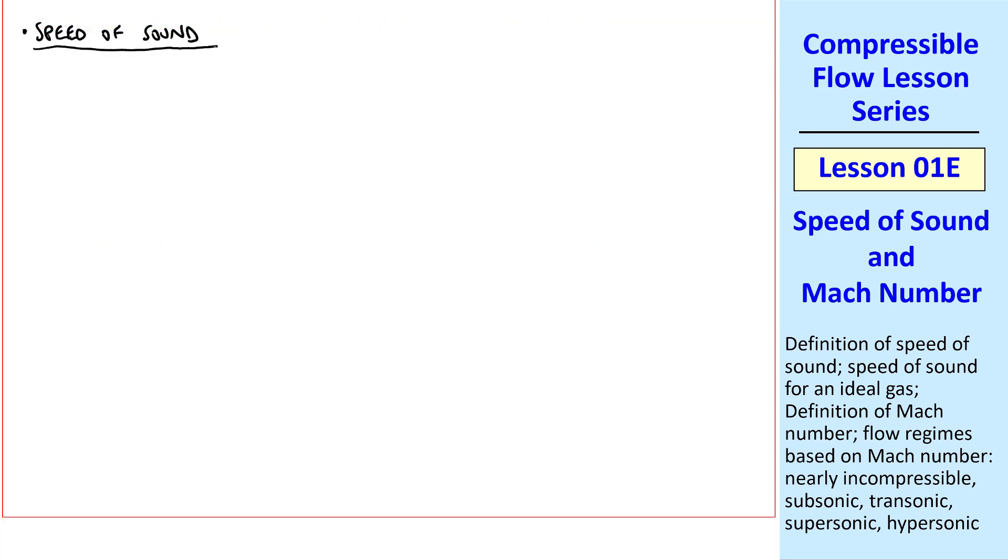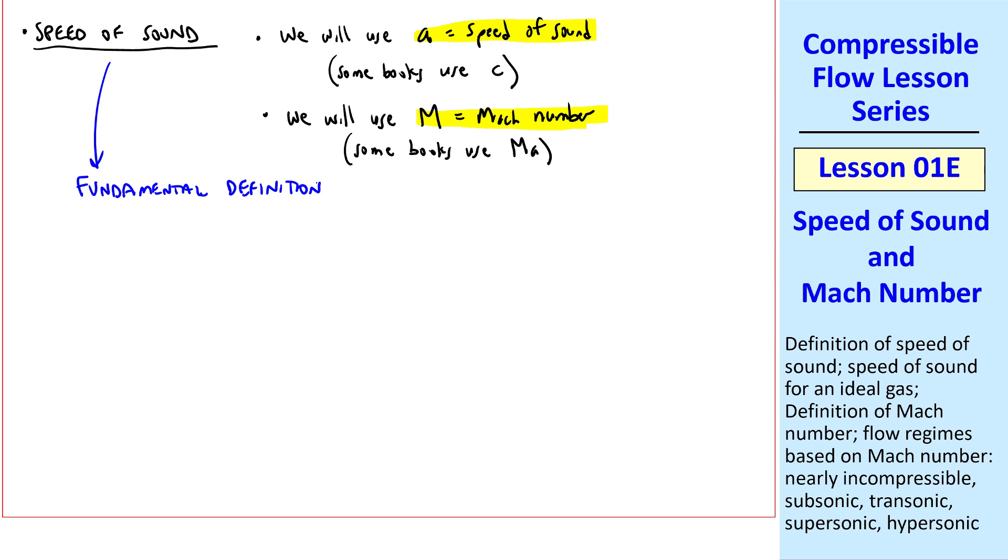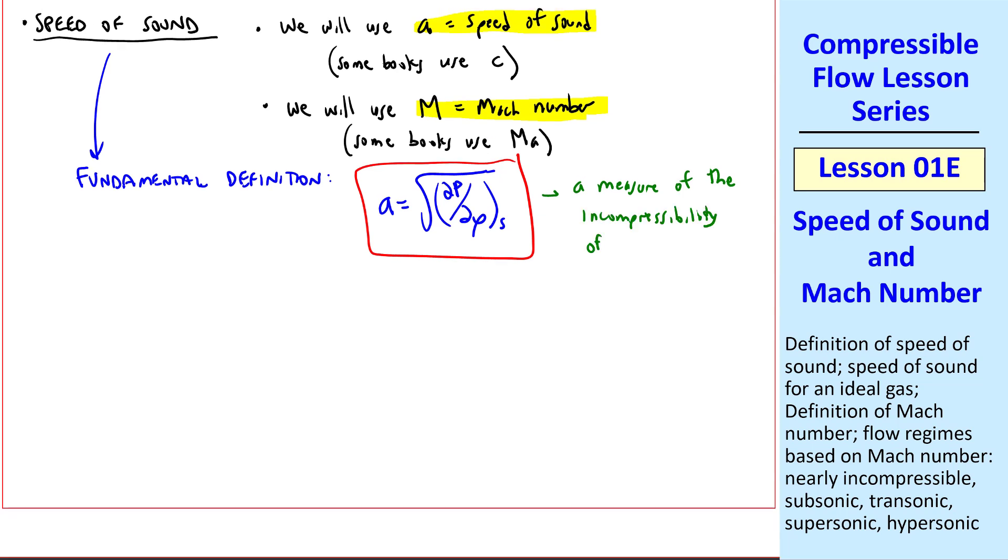Now let's discuss the speed of sound. We'll use lowercase a for the speed of sound. I caution you that some books use C instead of A, for example, my fluid mechanics book. But this is more common among those who study compressible flows. I also note that we'll use capital M for Mach number, where some books use MA. This is the notation we use in our fluid mechanics textbook, but we'll use capital M for Mach number here. The fundamental definition of speed of sound is that A is the square root of del P del rho at constant entropy. In other words, how does pressure change with density when the flow is isentropic? You can think of speed of sound as a measure of the incompressibility of a fluid.